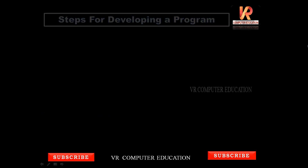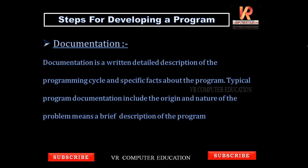After debugging, the final step is documentation. If everything is correct and all requirements are achieved successfully, then a detailed documentation — a description of the programming cycle — is prepared by the programmer: how this program was developed, what methods were used, what inputs were given, and what outputs are produced by the program. A detailed description of that particular program is given in the documentation.